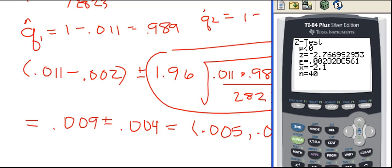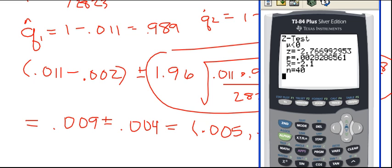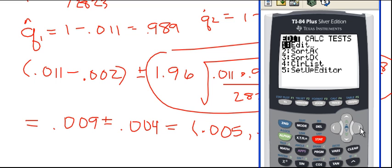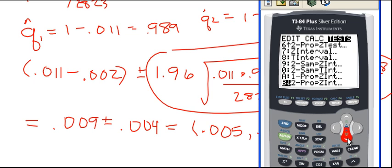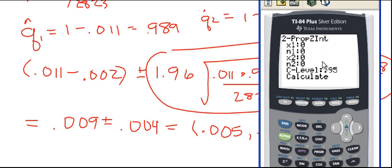So here's the TI calculator. I want to go to stat. And then I go over to test. And then I'm doing a 2-prop Z interval. So it's not this one because that's the test. We want the confidence interval. So I actually go all the way down to letter B, which is right here, 2-prop Z interval. I'm going to hit enter.